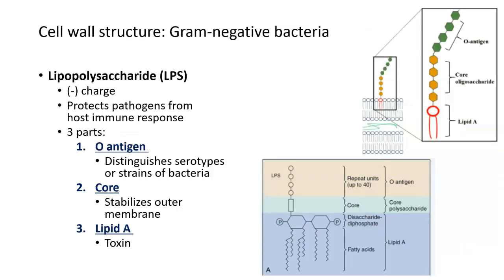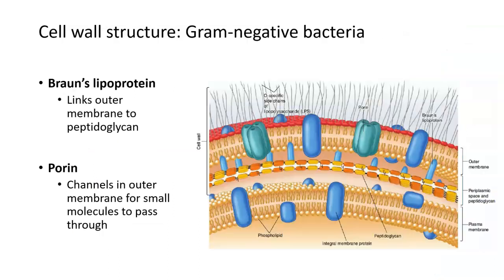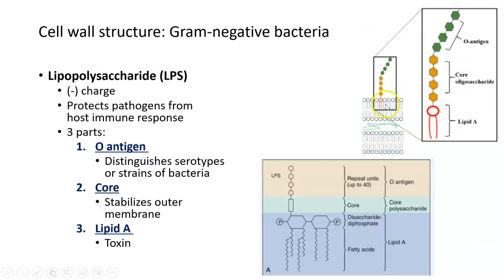Finally, there's a molecule called lipopolysaccharides or LPS — another major molecule in the gram negative cell wall. If you look at the slide, you can see all these gray little hair-like structures coming out of the outer membrane. Those gray structures are the lipopolysaccharides or LPS. It's the outer membrane and then a long projection extending out into the environment. Lipopolysaccharides are what give gram negative bacteria an overall negative charge, in the same way that teichoic acid does for gram positive bacteria.